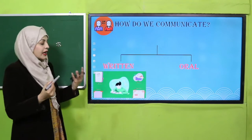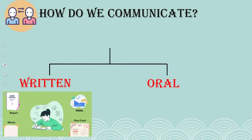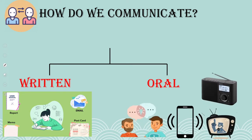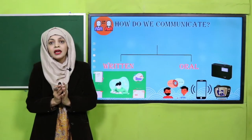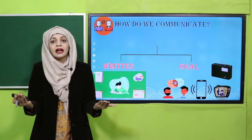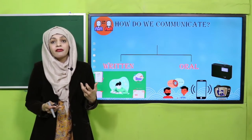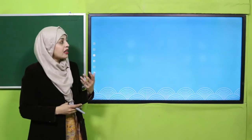Written communication includes sending email, WhatsApp messages, and other written forms where you write words and the other person reads them. Oral communication includes radio, television, mobile phone, and video communication — all different ways of communication. These are all called verbal communication.